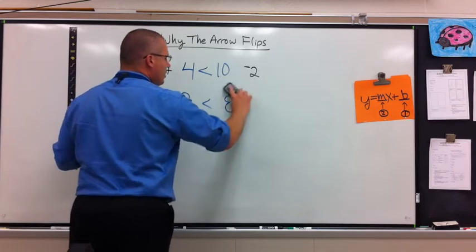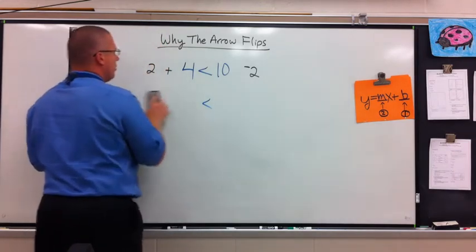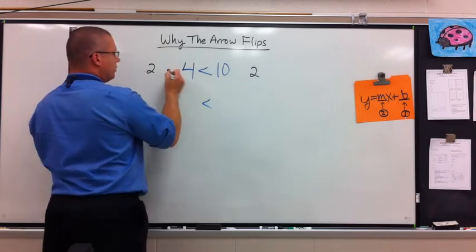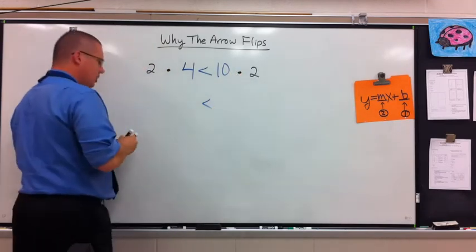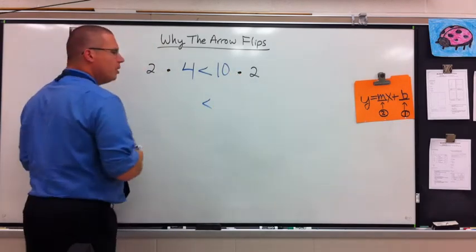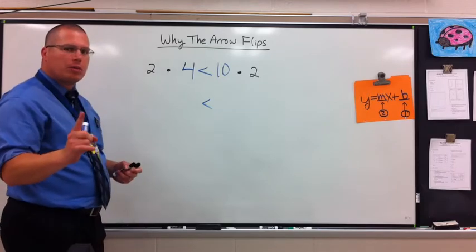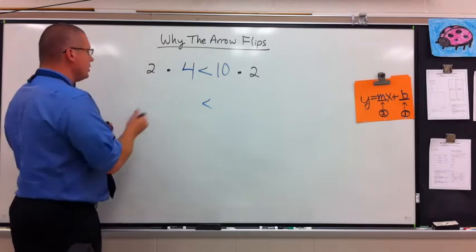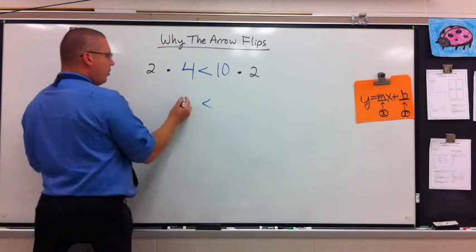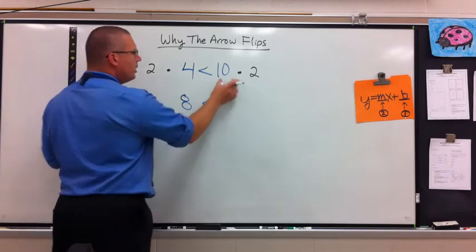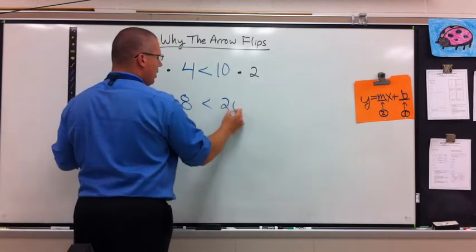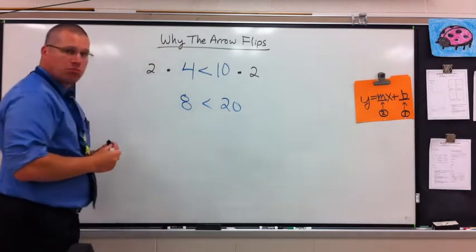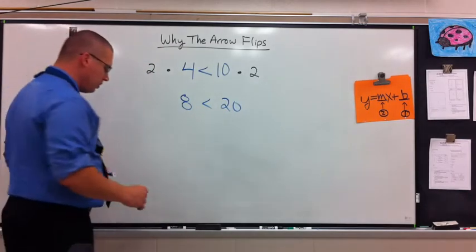So what happens if I multiply? Only when I multiply both sides by a negative number will it flip the arrow. Here's why. 2 times 4 is 8, and 10 times 2 is 20. 8 is still less than 20. Multiplying by a positive doesn't change it.